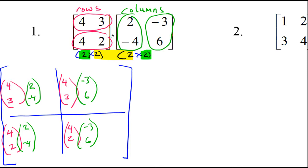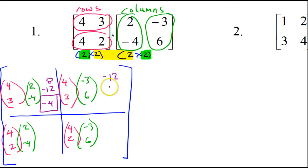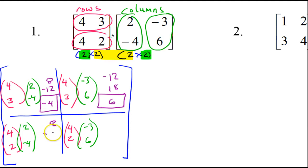Now I just multiply and add. Multiplying here, I get 8; multiplying here, I get negative 12. If I add those up, I get negative 4. Multiplying here, I get negative 12; multiplying here, I get 18. Add them up, that's 6. Multiply here, I get 8; multiply here, I get negative 8. Add them up, that's 0.